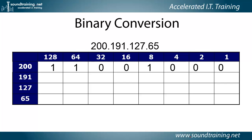Now let's do 191, and I'll show you a really cool trick. Can we subtract 128 from 191? Sure. So we put a 1 in the 128's column, leaving a remainder of 63. Can we subtract 64 from 63? No. So we put a 0 there. But look what we put in the remaining placeholders: all 1's. And the reason is simple.